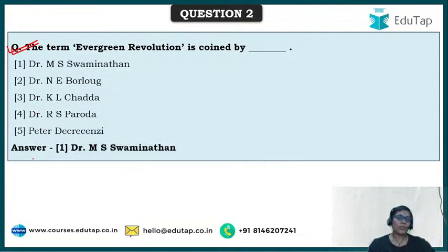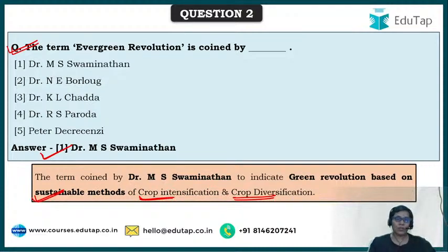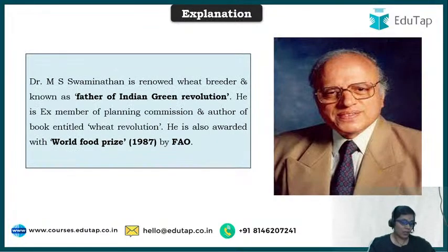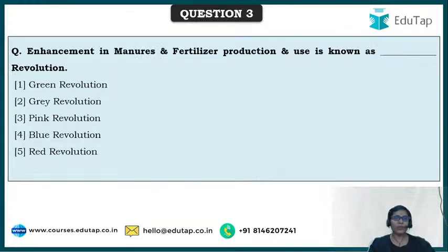The correct answer is Dr. M.S. Swaminathan. Yes, it is Dr. M.S. Swaminathan who coined the term 'evergreen revolution' to indicate green revolution based on sustainable methods of crop intensification as well as crop diversification. Dr. Swaminathan is also known as the father of the Indian green revolution. He is an ex-member of the Planning Commission, author of the book 'Wheat Revolution,' and was awarded the World Food Prize by FAO in 1987.